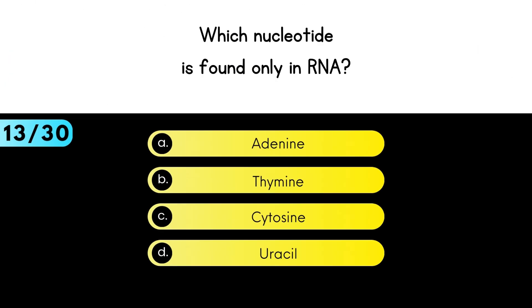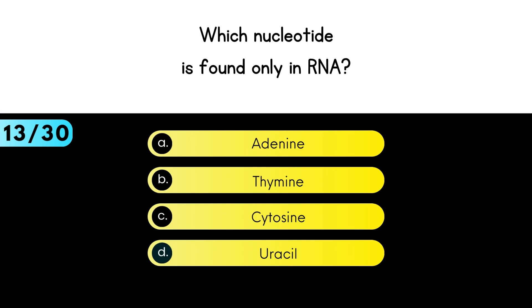Which nucleotide is found only in RNA? Uracil is the answer.